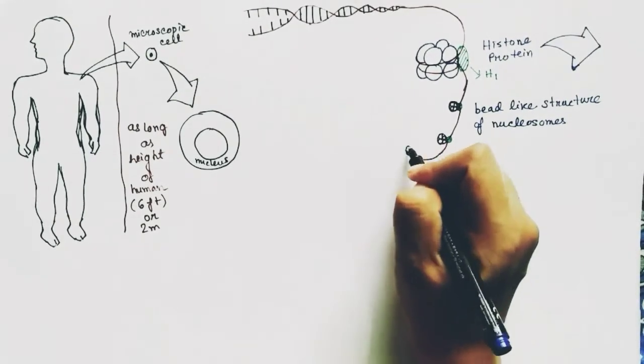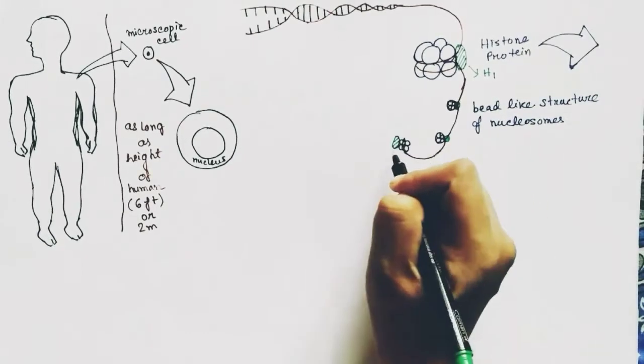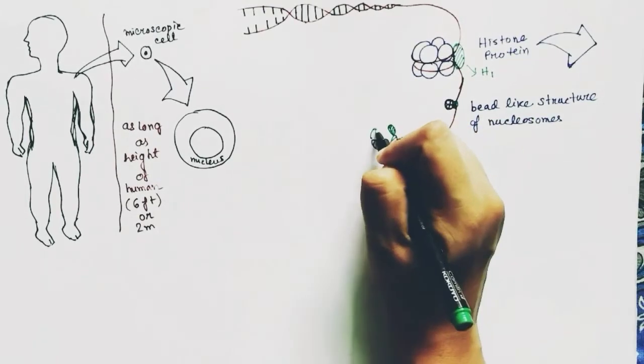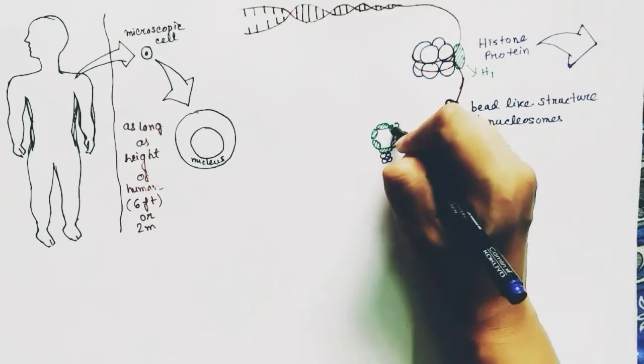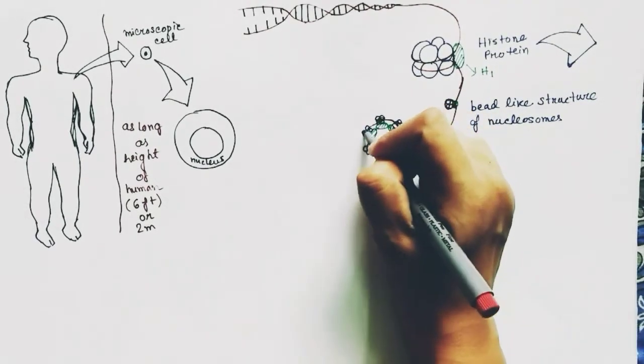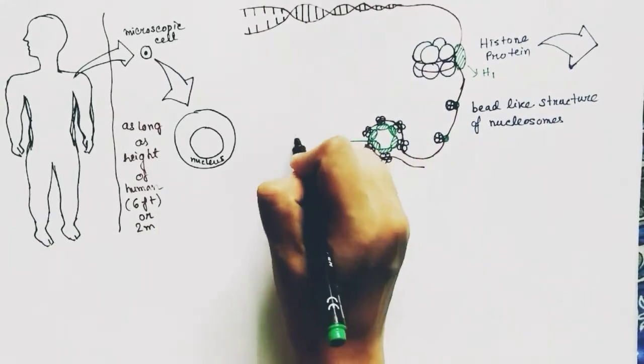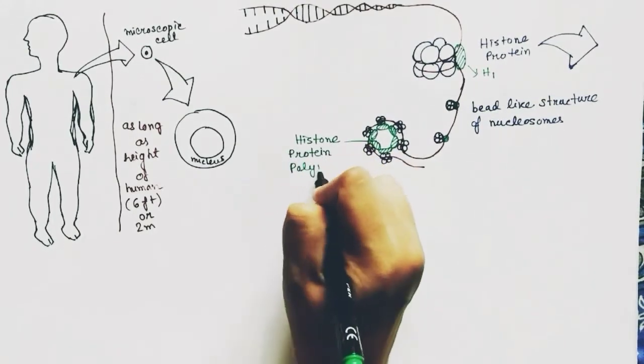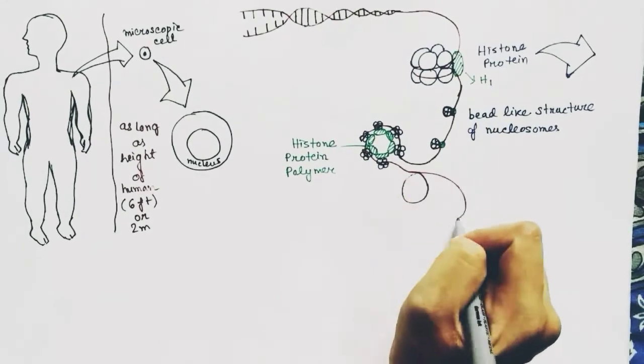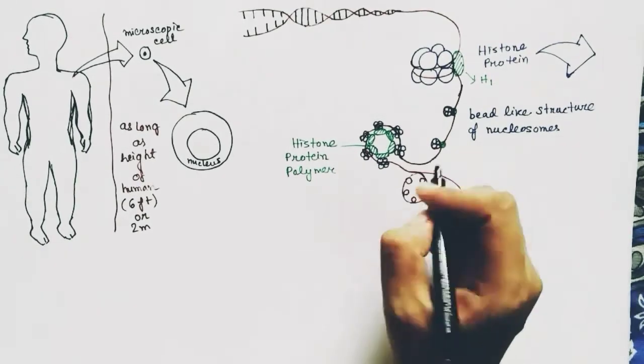As it continues, the H1 proteins of different octamers can combine with each other and form the histone protein polymer, attaching few histone octamers into a loop. This is the histone protein polymer. Because of this polymerization, a loop-like structure forms which contains the bead-like structures.